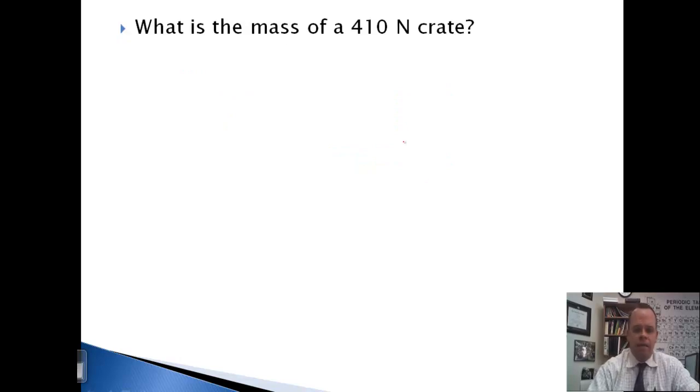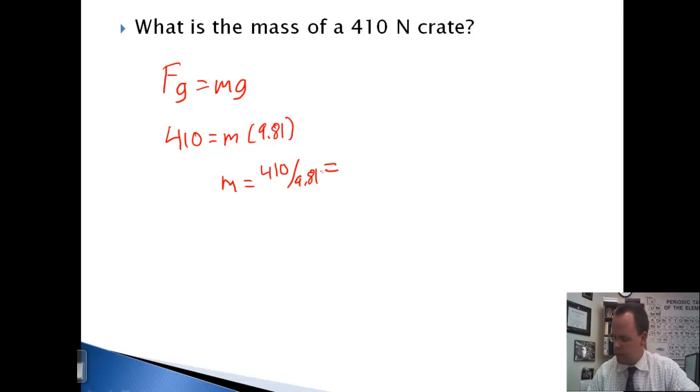What is the mass of a 410 newton crate? So once again, force of gravity equals mass times acceleration due to gravity. So 410 equals mass times 9.81. The mass would be 410 divided by 9.81. This comes out to 41.8 kilograms.